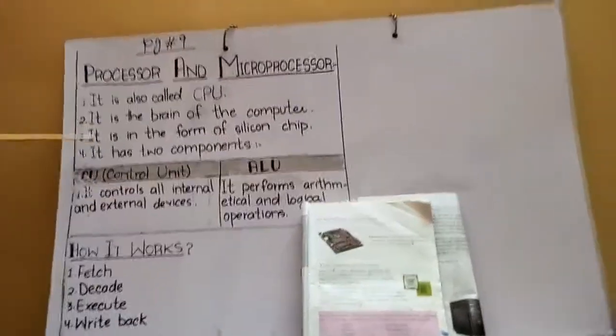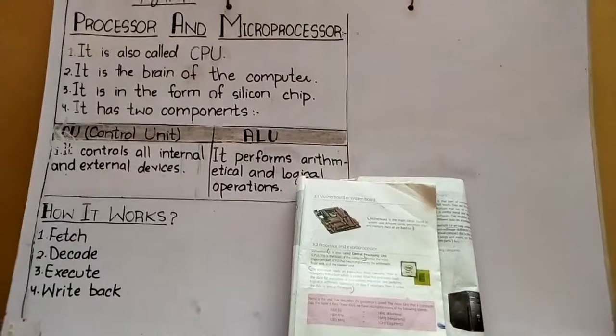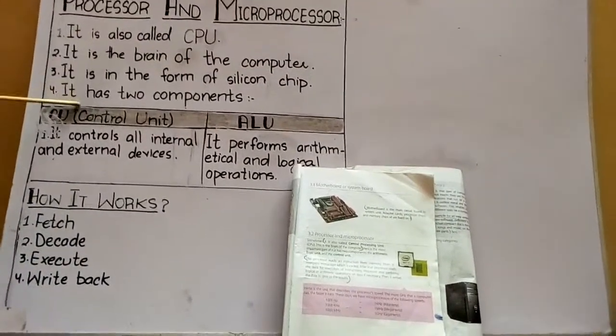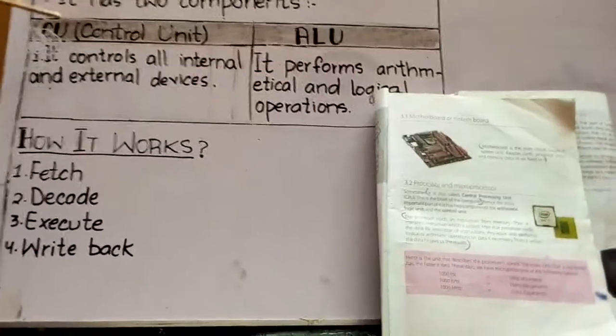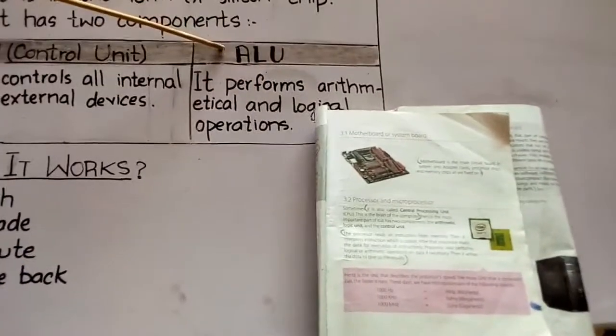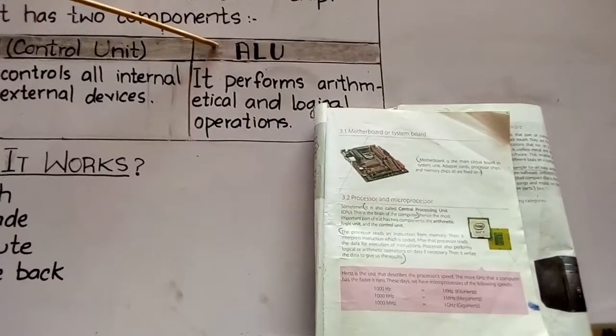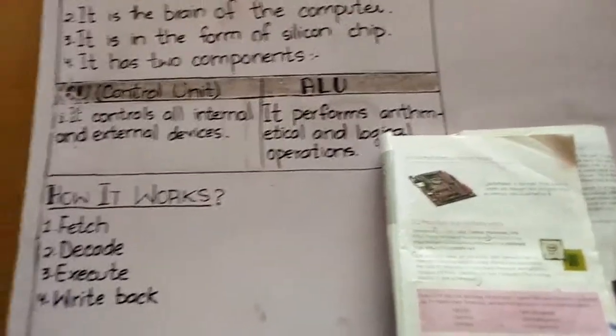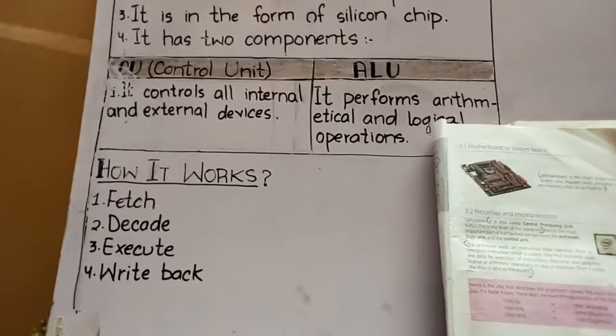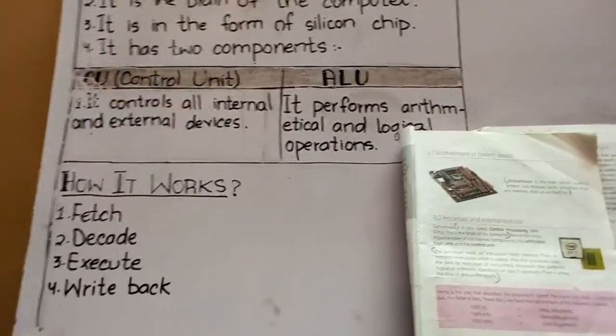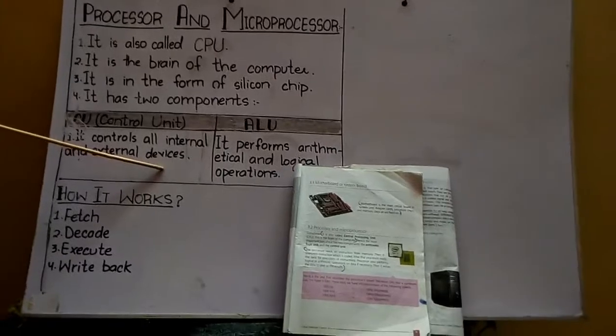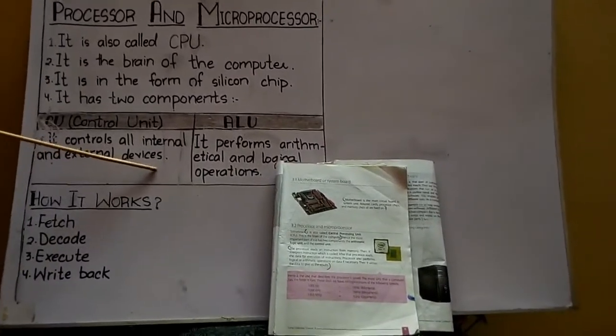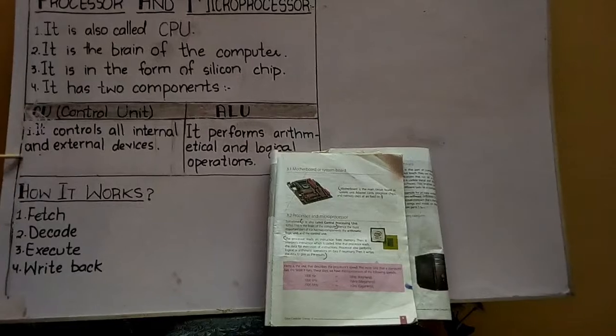It is in the form of silicon chip. The processor has two components. Number 1 is Control Unit (CU), and number 2 is ALU, meaning Arithmetic and Logic Unit. What is Control Unit? It controls all internal and external devices.